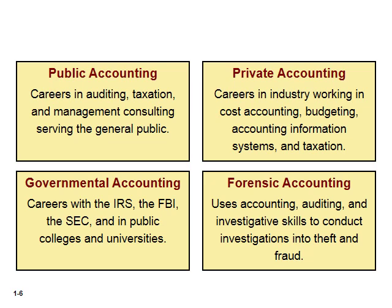There are four big public accounting firms: PricewaterhouseCoopers, Ernst & Young, KPMG, and Deloitte. Those are the Big Four accounting firms — they audit most of the big companies like Chevron and Apple. There are also regional firms such as Moss Adams. There are hundreds of firms altogether.